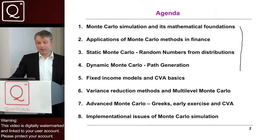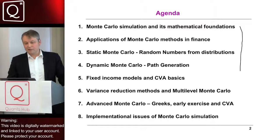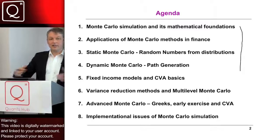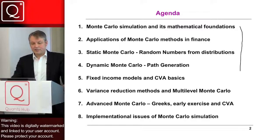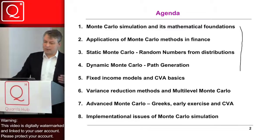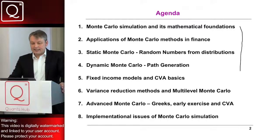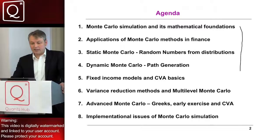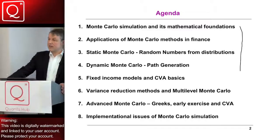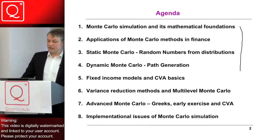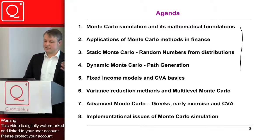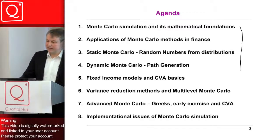Finally, today we consider dynamic Monte Carlo — it's an evolution, as I said. We have to find several recipes for evolving our system into the future. To this end we generate what we call a path: the outcome of a random experiment is a path. A path is a continuous object, but within a computer program we work with a discrete object — a discretization of the continuous path. We have to ask ourselves if there are good recipes for discretizing a path to achieve a good approximation of the continuous path.